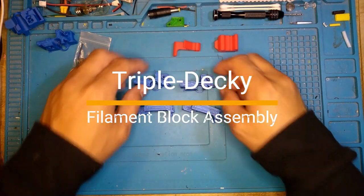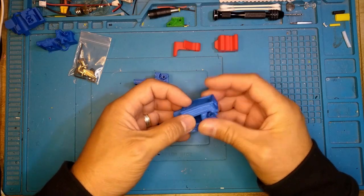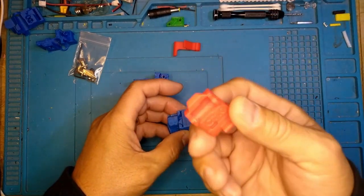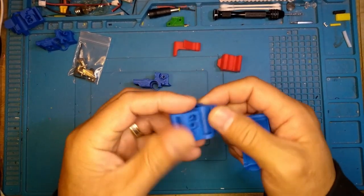These pieces are for the triple-decky. Triple-decky has three parts to it: top hat, a filament path, and the base.